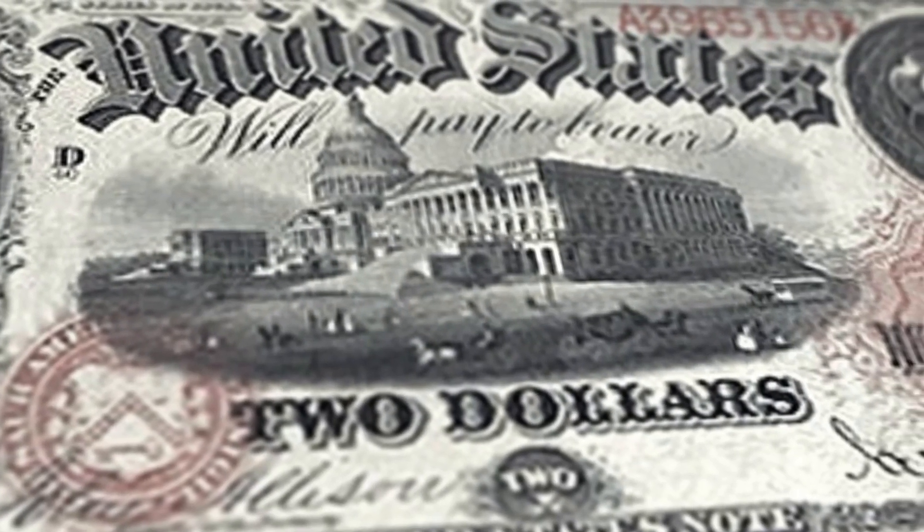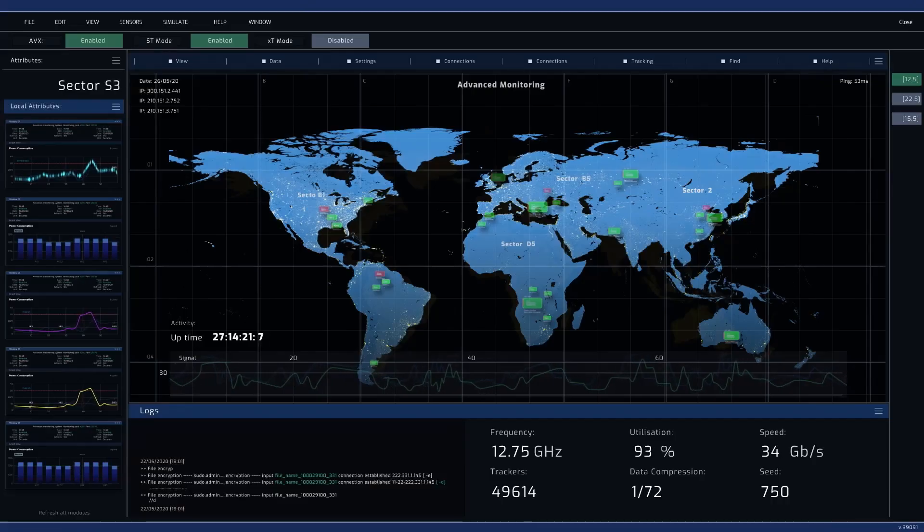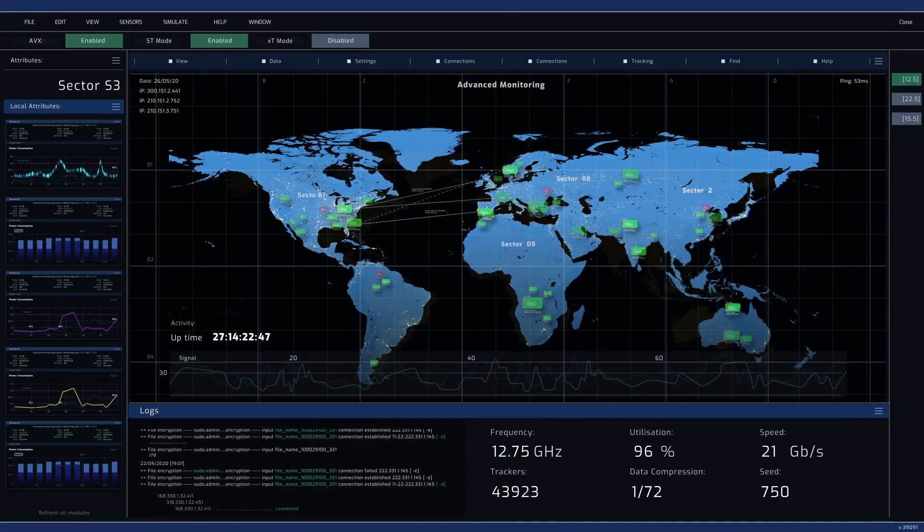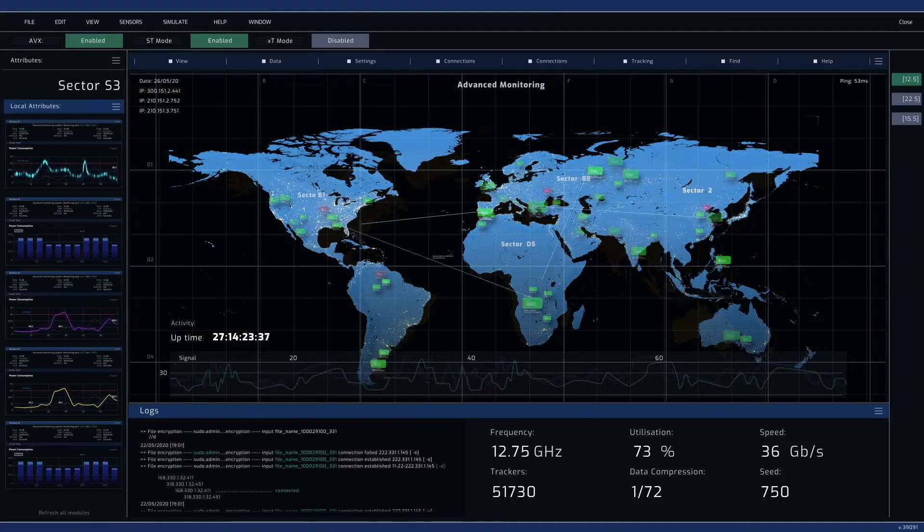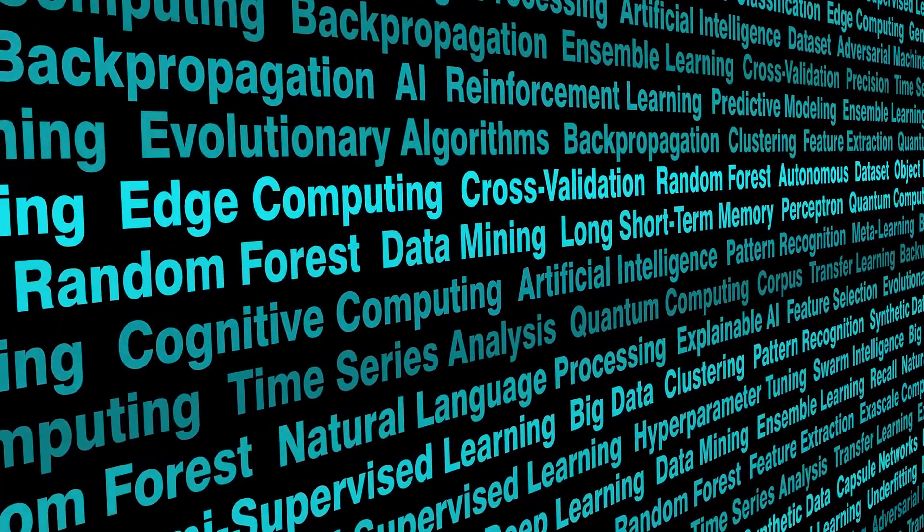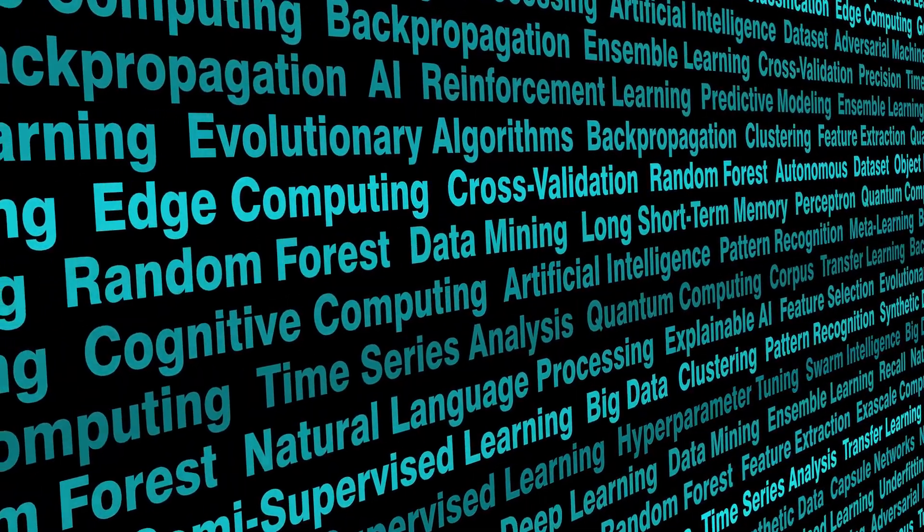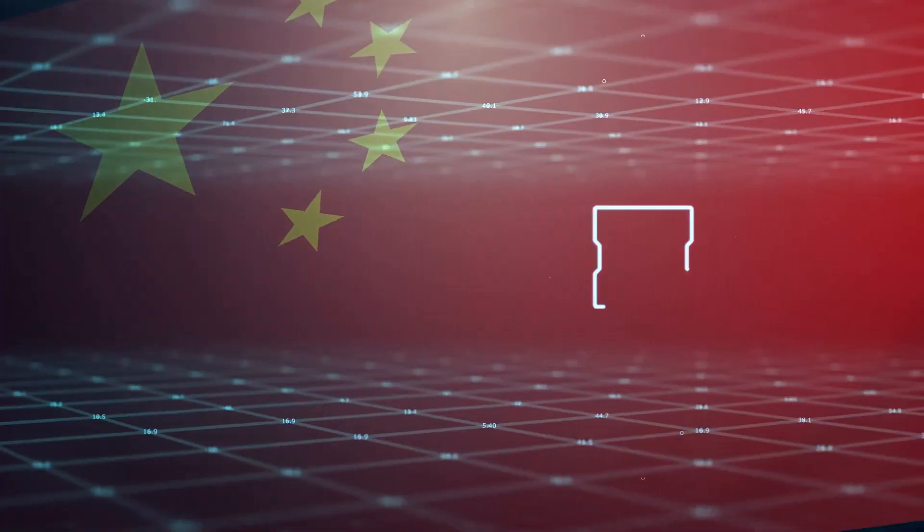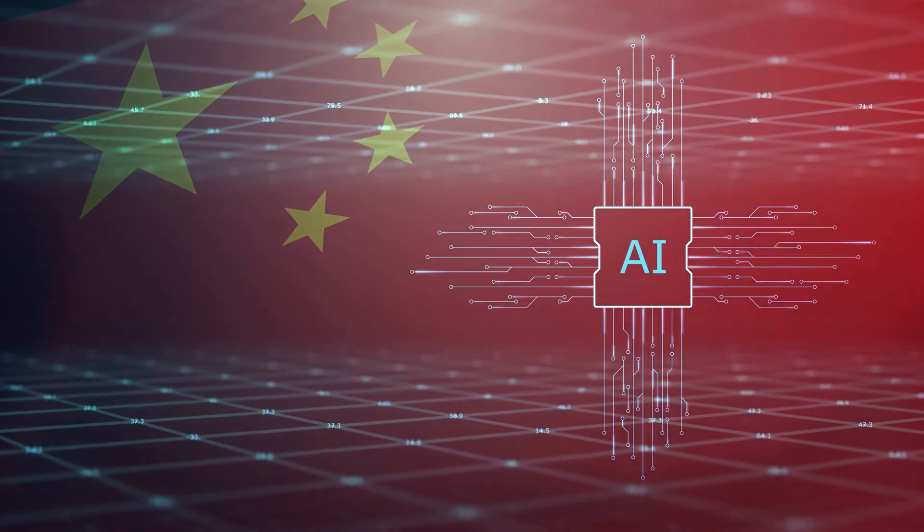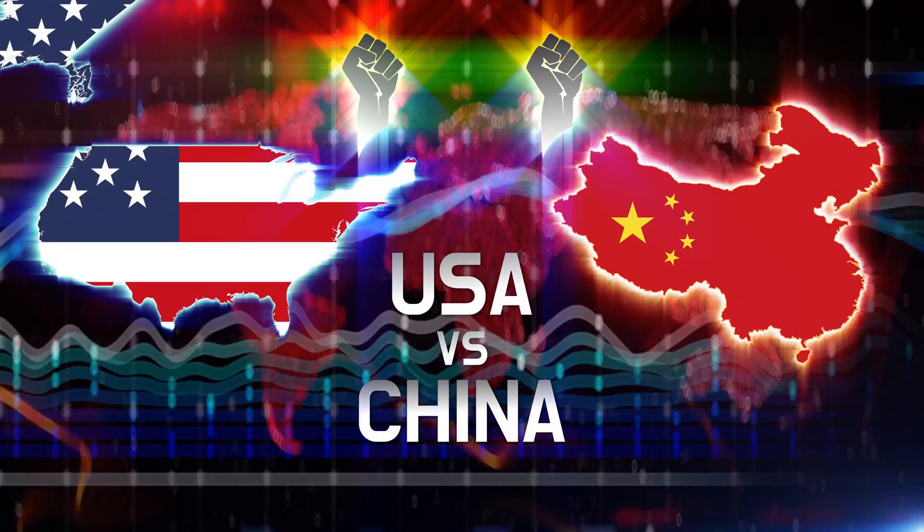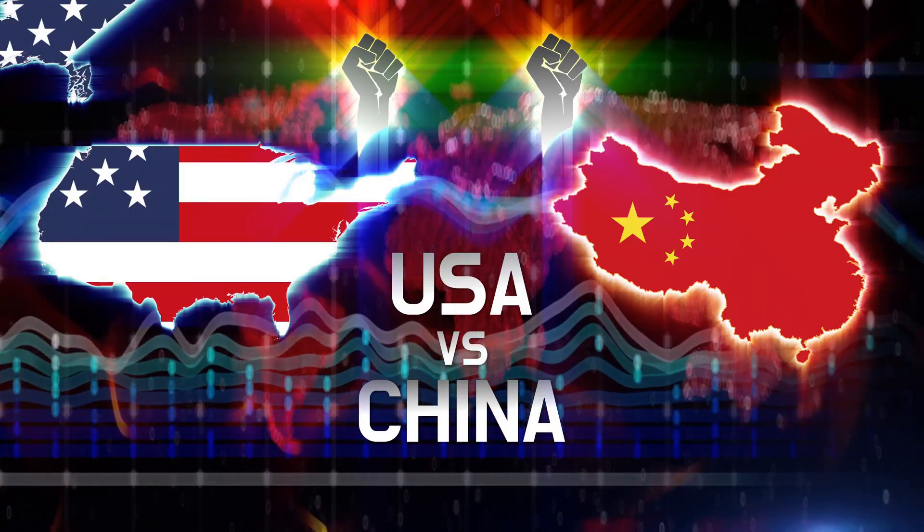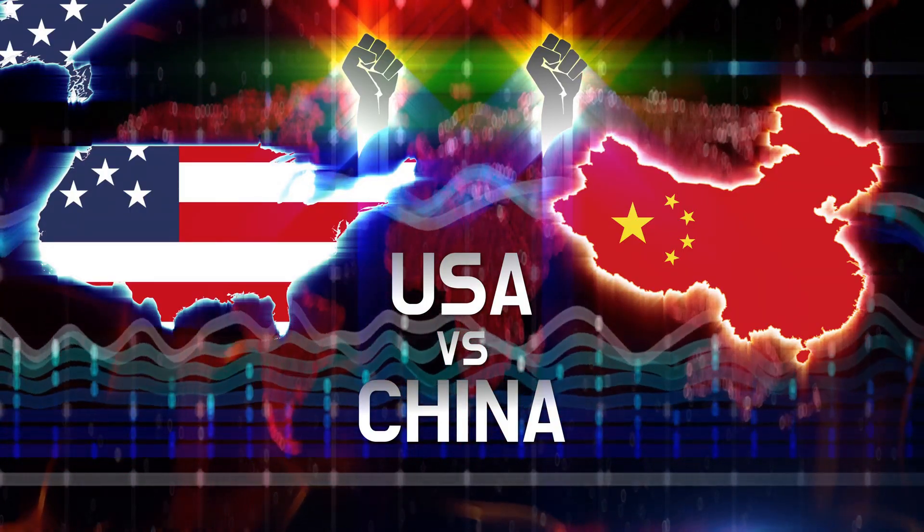But the true significance of DeepSeek extends far beyond the financial realm. This is a geopolitical game-changer. The US has long held a dominant position in AI, but DeepSeek's emergence signals a potential shift in global power. Affordable AI solutions could empower developing nations, forging new economic and technological partnerships with China. This raises profound questions about the future of international relations, the balance of power, and the ethical considerations surrounding the development and deployment of advanced AI.